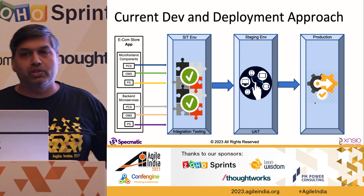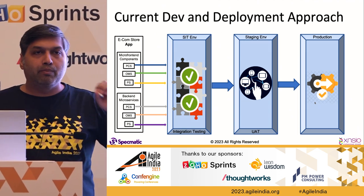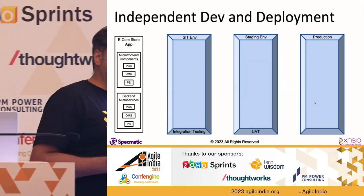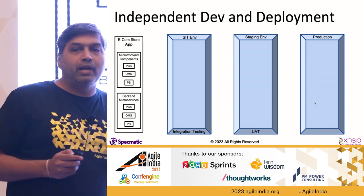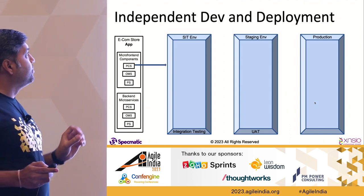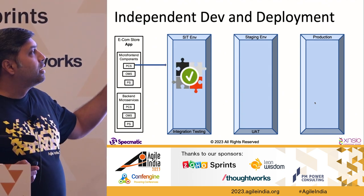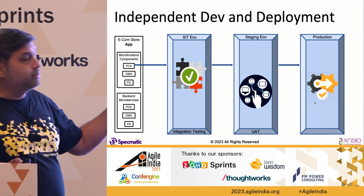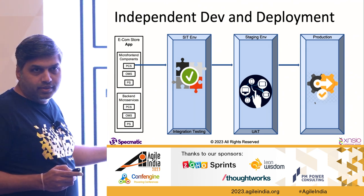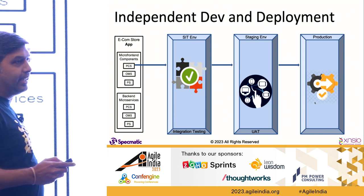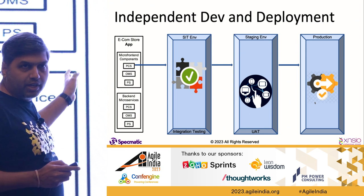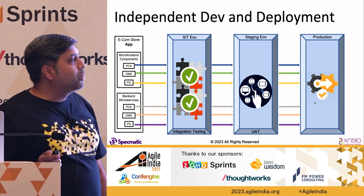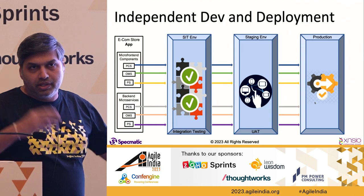That's the problem we want to solve, and contract-driven development is a specific approach to address it. But first, let me reiterate what independent deployment means. This service is ready — you should be able to test it with the rest of the system, push it forward, go all the way to production, even while none of the other pieces are ready. You should be able to independently take any of these components — services or front-ends — all the way to production without waiting for others.